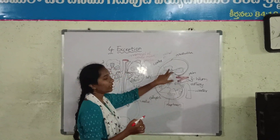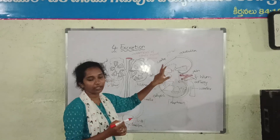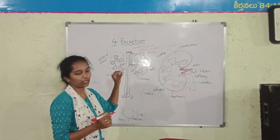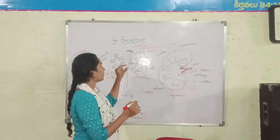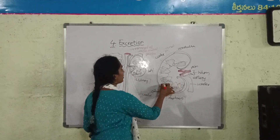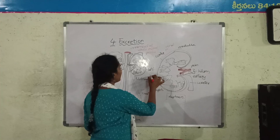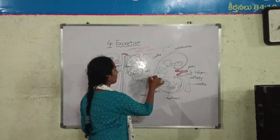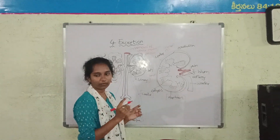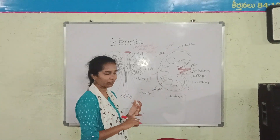Here is a nephron. Each kidney, each unit, has 1 million nephrons. So, one million of nephrons.